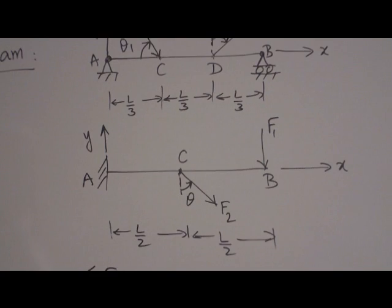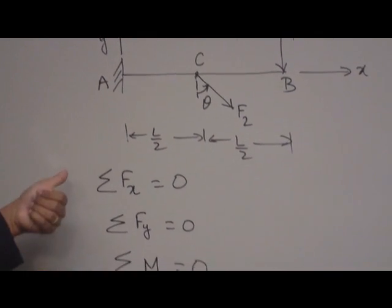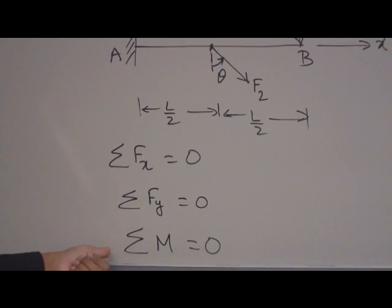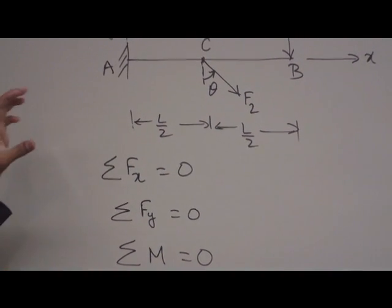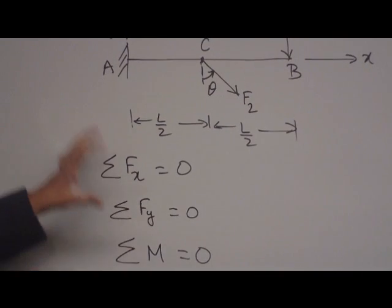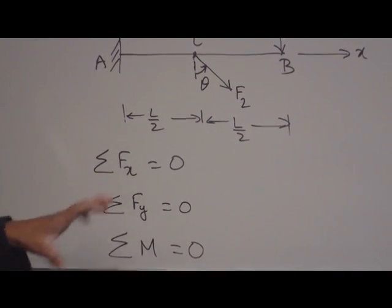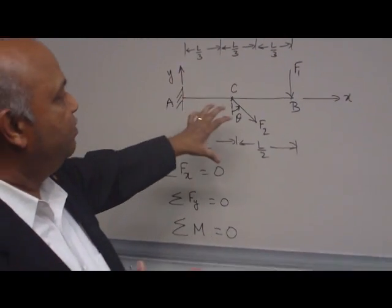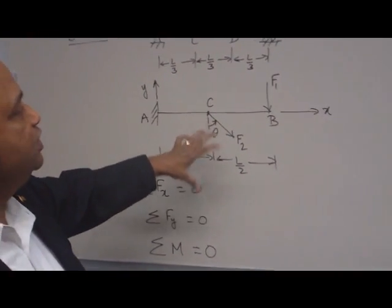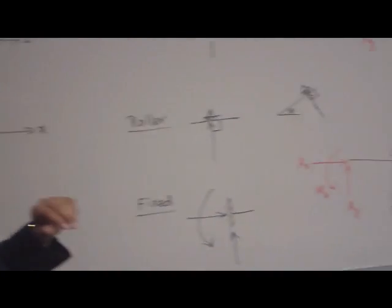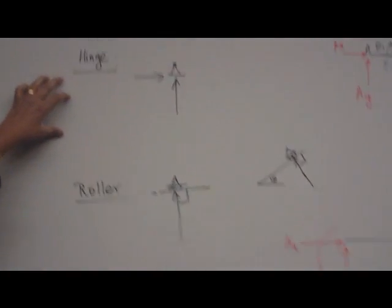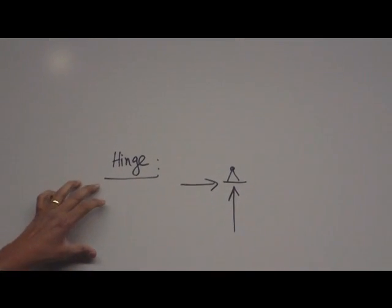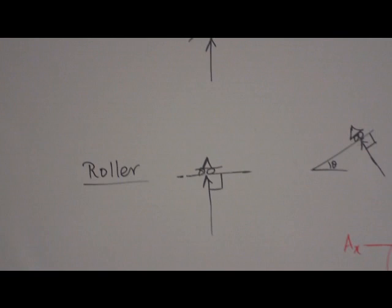So we have three equilibrium equations. Sum of the force in the x direction zero, sum of the force in y direction zero, sum of the moment equal to zero. So to figure out what are the forces acting, we need the free body diagram. That shows the visual force, the visible force, also the hidden force. To account for all the hidden force, we'll see each support, hinge, roller and fixed support.